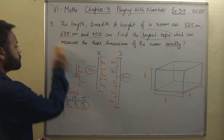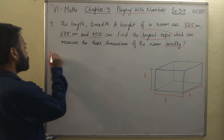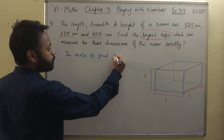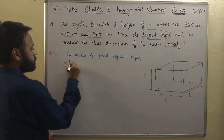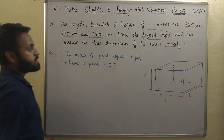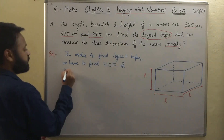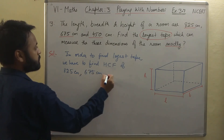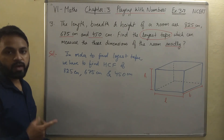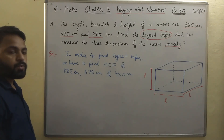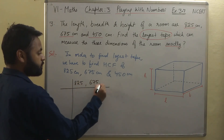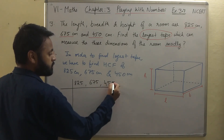Let's start this question now. In order to find the longest tape, we have to find the HCF of the three dimensions: HCF of 825 cm, 675 cm, and 450 cm. For this, I told you one very simple method of finding HCF — that is the prime factorization method. We make a line diagram and write all three quantities: 825, 675, and 450, all together.